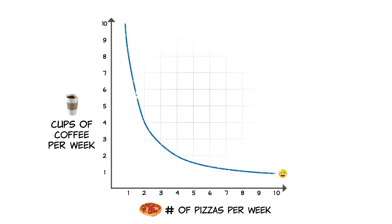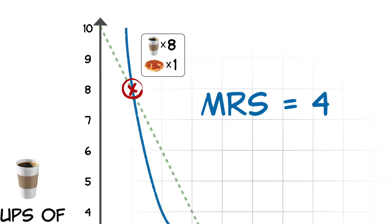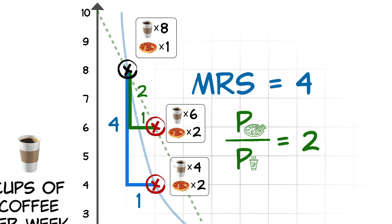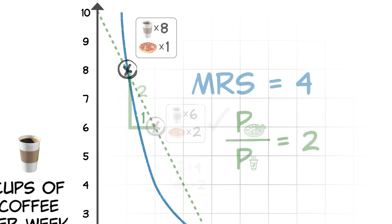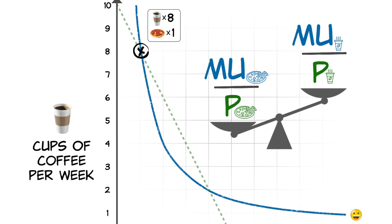Let's go back to thinking at the margin. At this point, would it make you happier to spend more money on pizza and less on coffee? Here, the marginal rate of substitution is 4, meaning you are willing to forego 4 cups of coffee to get one additional pizza. But pizza is only twice as expensive as coffee. The market is asking you to forego fewer cups of coffee than you are willing to — so you get that extra pizza.